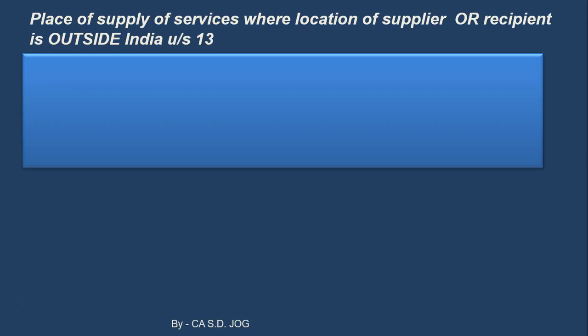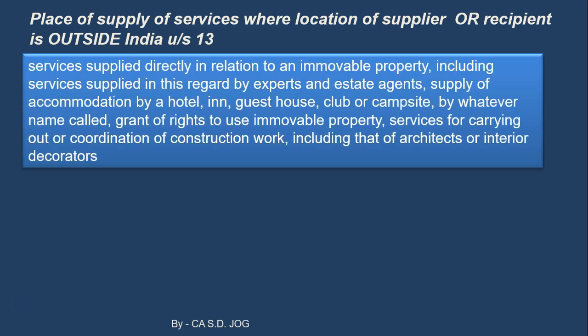Next case under Section 13 where supplier or recipient is outside India. Services supplied directly in relation to immovable property, including services supplied in this regard by experts, estate agents, supply of accommodation by a hotel, guest house, club or campsite by whatever name called, grant of right to use immovable property like rent or tenancy rights, services for carrying out or coordination of construction work including that of architects and interior decorators.